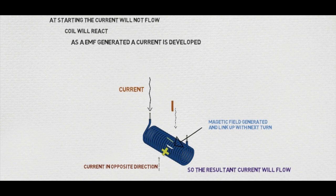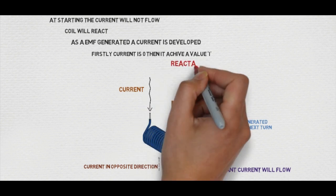So firstly, the current in the coil is zero, then it achieves a value of I. This is called reactance.